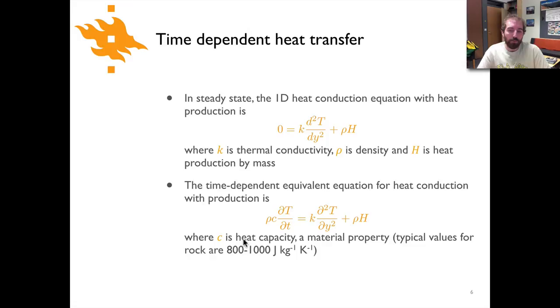Heat capacity is another material property and typical values for rock are somewhere between 800 and a thousand joules per kilogram per kelvin.